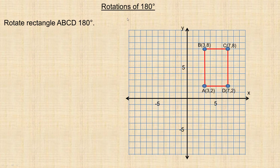In this tutorial we're going to take a look at rotations of 180 degrees. 180 degrees is exactly half of a circle rotation. A full rotation is 360 degrees, and half of 360 is 180. So some people will call it a half turn because it's going halfway around the circle.